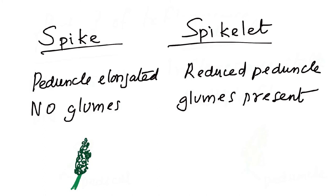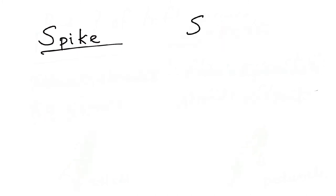From the diagram itself we can see that in a spike, all the flowers of the inflorescence are arranged together in a very compact manner. When that kind of multiple flower development occurs on a smaller scale, we can call it a spikelet. That's the key difference between a spike and a spikelet.